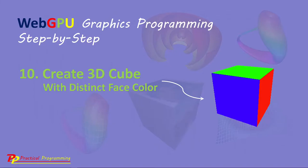This example involves a lot of code and mathematics, so please get ready to digest it. In order to create real 3D objects in WebGPU, you need to have the mathematical background of 3D matrices and 3D transformations. Since our computer screen is two-dimensional, it cannot directly display 3D objects. To view 3D objects on a 2D screen, you have to project your object from 3D to 2D. That will involve a series of coordinate transformations.